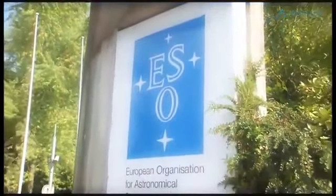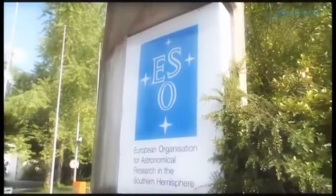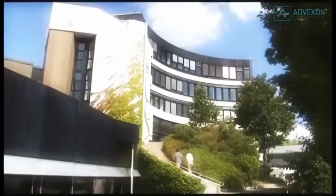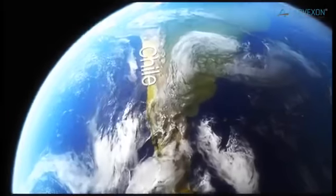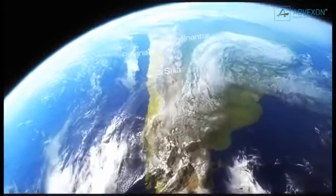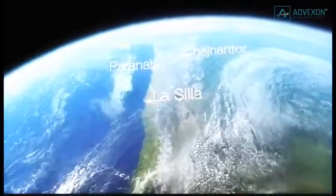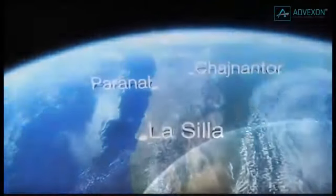The European Southern Observatory has its headquarters in Garching, Germany. But from Europe, only part of the sky can be seen. To fill in the gaps, you have to travel south.